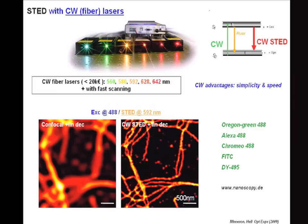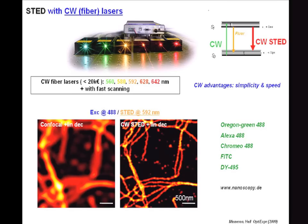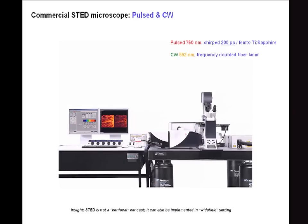One can also use continuous wave beams. The advent of very compact CW fiber lasers has simplified matters quite a lot. In principle, you can excite with a laser pointer and then use a fiber laser giving out half a watt or watt or 1.5 watts — there's ample light for microscopy. Since there is a wide range of CW lasers, this is a very attractive way of doing STED microscopy, also because you get fluorescence throughout the time — there is continuous exposure of fluorophores. CW STED microscopy has become quite popular, can be done with many popular dyes, and has also become commercially available, as has the pulsed version.